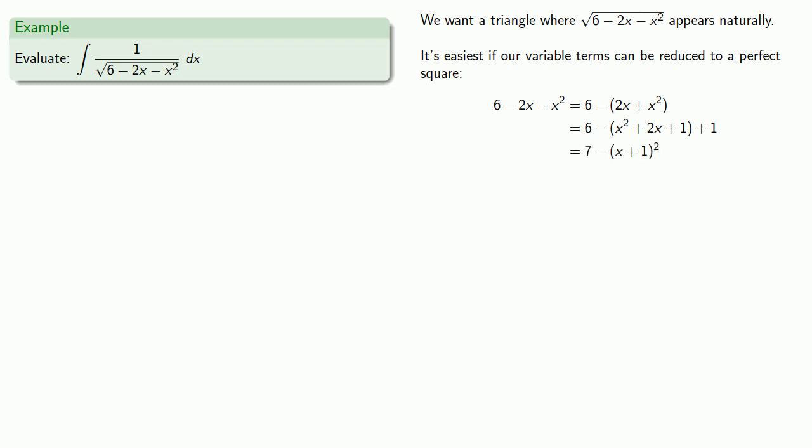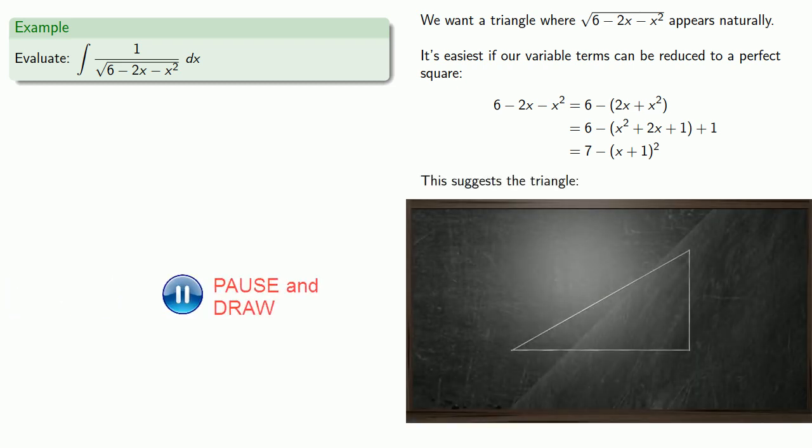So that means we want a triangle where one side is square root 7, another side is x plus 1, and the third side is square root 6 minus 2x minus x squared. One possibility is...